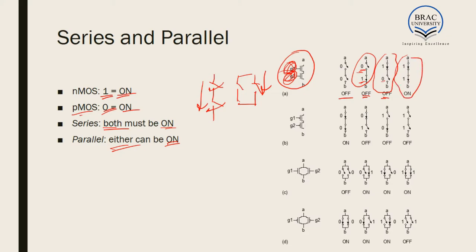In case of PMOS in series, the condition is the same — both the first MOSFET and second MOSFET have to be turned on. But for PMOS, that condition occurs at the zero-zero input condition. In the zero-zero case, both are on and current flows. In all other conditions, at least one of them is off and current does not flow.